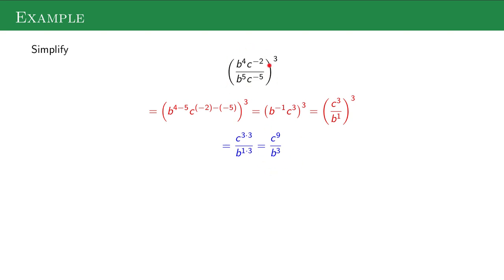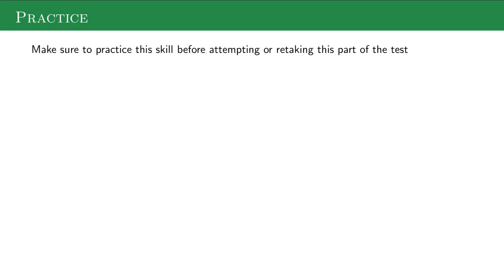So I basically simplified inside the parentheses as much as possible to get c³ over b. This exponent on the outside distributes to both of those pieces. Those are the basic rules for simplifying exponential expressions.